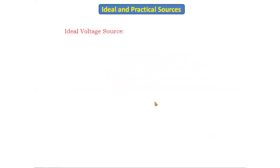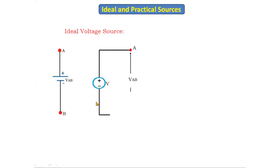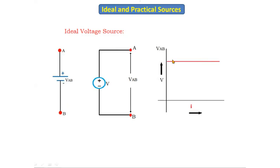The ideal voltage source symbol is simply a battery symbol or voltage source symbol. If you see the characteristics of the ideal voltage source, we get a constant voltage. Here, as we change the current continuously, up to a certain point there is no change in the voltage, and after reaching that point the voltage remains constant.